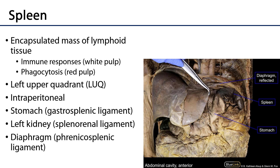The spleen is an encapsulated mass of lymphoid tissue. Its parenchyma consists of two types of tissues: there's the white pulp, in which immune responses are mediated, and the red pulp, in which blood is filtered and phagocytosis occurs.